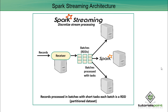Each batch will be known as one RDD, and these batches will be processed with tasks at different nodes available. Depending upon the locality and availability, these RDDs will be assigned to multiple different nodes in parallel for processing. Records are processed in batches with short tasks — each batch is an RDD — and this is the concept of a partitioned data set.